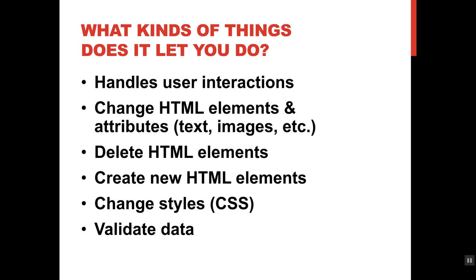What kind of things can you actually do with JavaScript? You can handle user interactions — if they click on particular things or type a certain value into a text box, you can have some particular event occur. You can use it to modify the page while they're physically looking at it: switch up what's inside your HTML elements, change attributes of text, swap out images. You can get stuff off the page, delete elements, create new elements, and change styles.